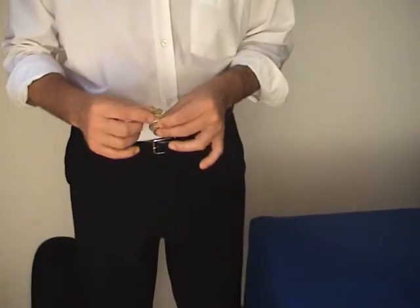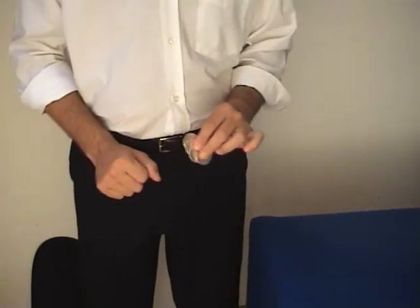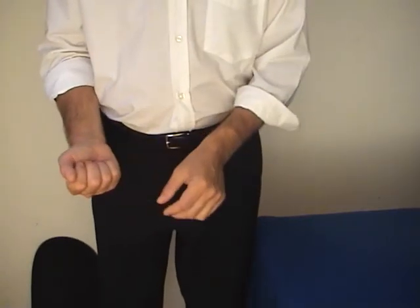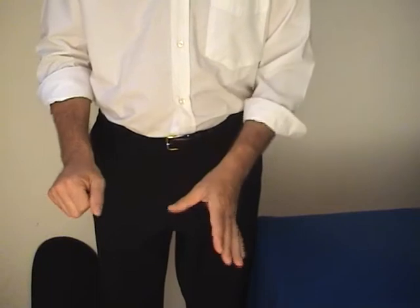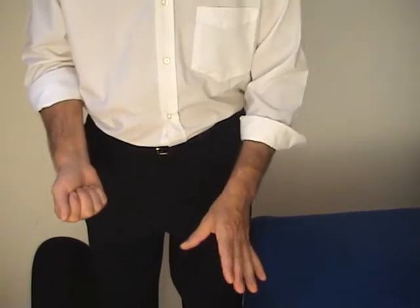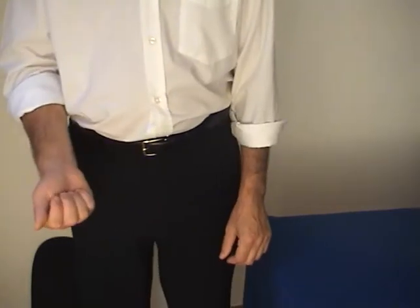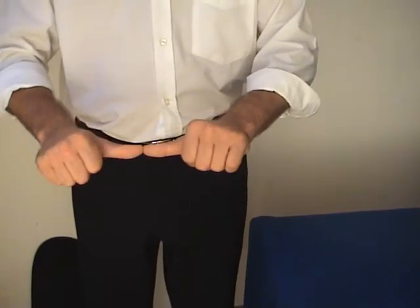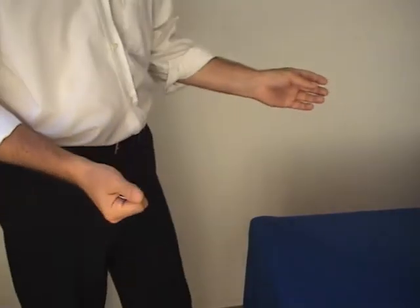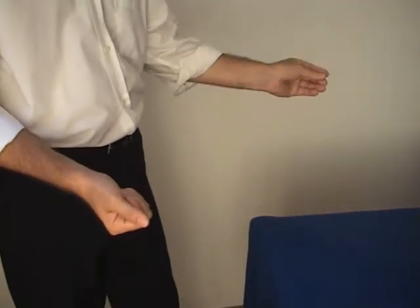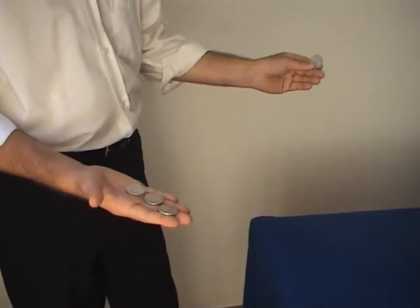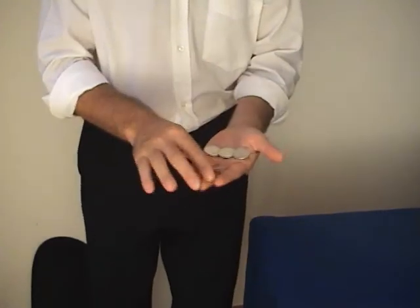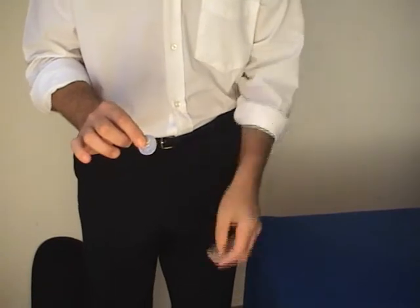I'm going to make these four American half dollars jump from one hand to the other invisibly, one at a time. First coin, close the hands, join the fingers, and watch. One, two, three. Pretty cool, huh? Apparently not, okay.